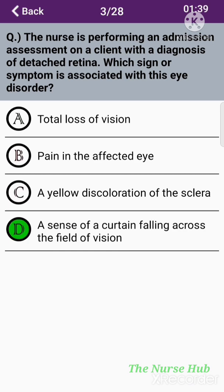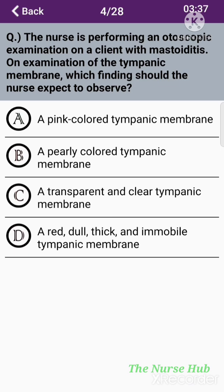The fourth question: The nurse is performing an otoscopic examination on a client with mastoiditis — an examination of the tympanic membrane. Which finding should the nurse expect to observe? Option A: A pink-colored tympanic membrane. Option B: A pearly-colored tympanic membrane. Option C: A transparent and clear tympanic membrane. Option D: A red, dull, thick, and immobile tympanic membrane. The correct answer is option D: A red, dull, thick, and immobile tympanic membrane.